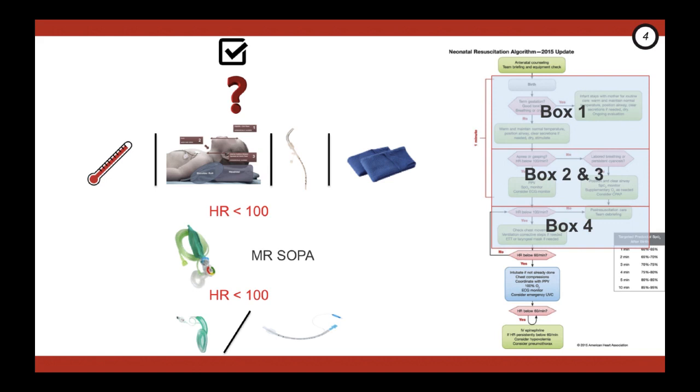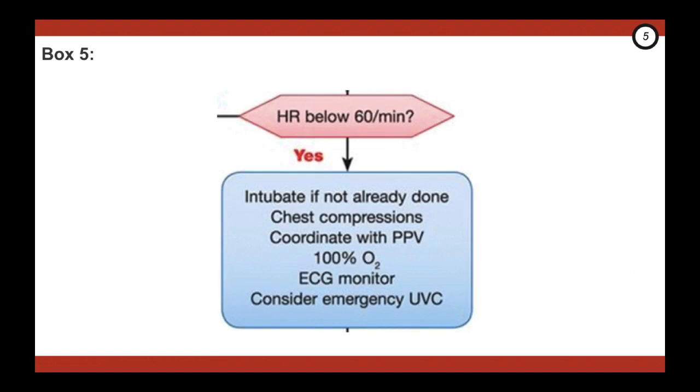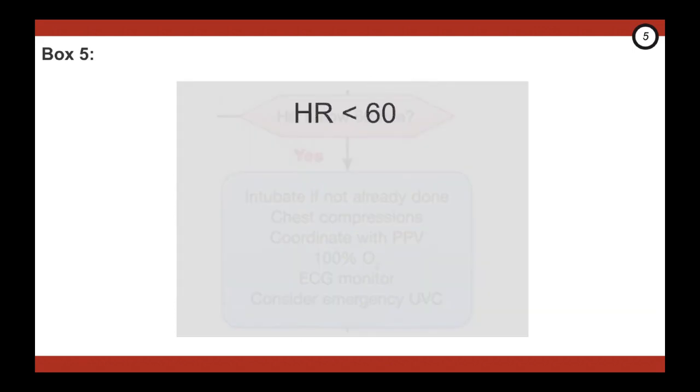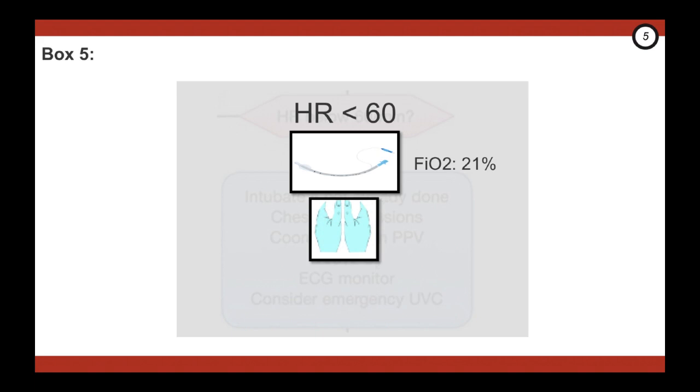This brings us to box five. So you've intubated and attempted ventilation for 30 seconds. The next step is to check the heart rate. If the heart rate is less than 60, then you want to intubate if you haven't already, and then start chest compressions. The key concept here is that you want to establish adequate ventilation first prior to starting chest compressions.